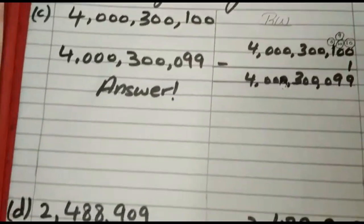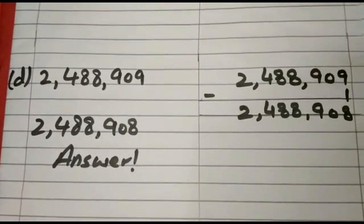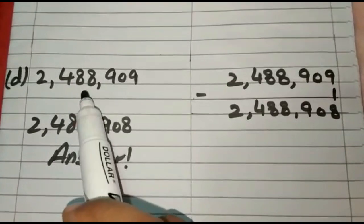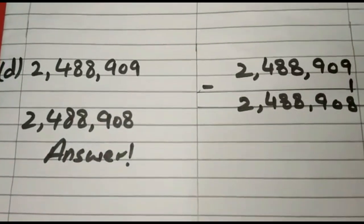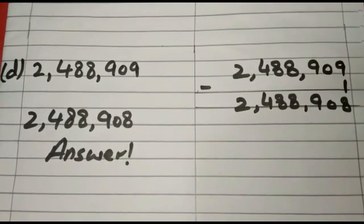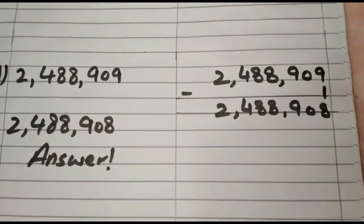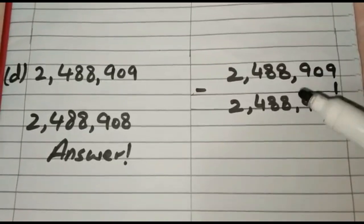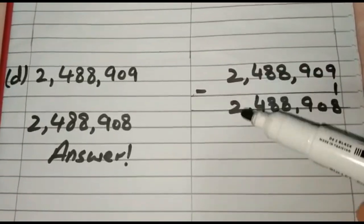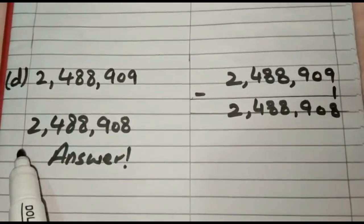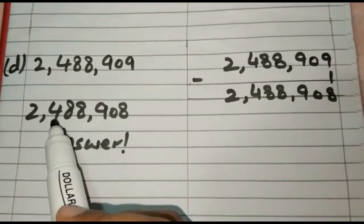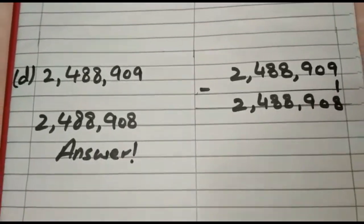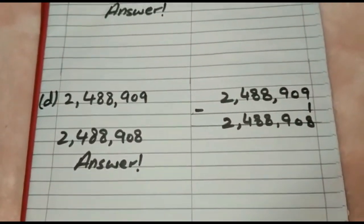Now let's move towards part D. That is 2,488,909. We have to subtract 1 in order to find the predecessor. 9 minus 1, 8, 0, 9, 8, 8, 4 and 2. So the predecessor of this number is 2,488,908. So students this was all about the descending order and predecessor.